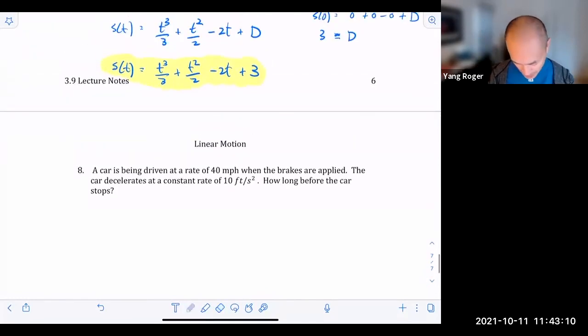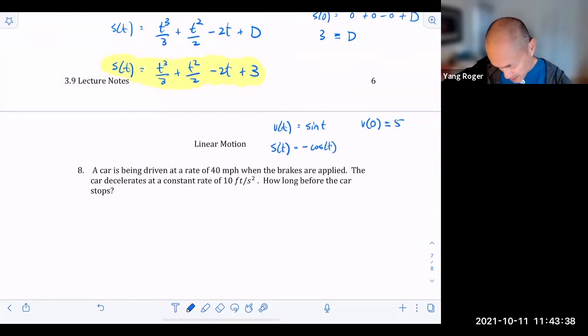So I just wanted to give you a quick example. Like, let's say I told you that V of T is equal to cosine of T. And then let's say I told you that V of zero is equal to five. I'm sorry. Make this a sine of T like this. So when you do this, the antiderivative of sine is negative cosine, right? So this is going to be negative cosine of T plus C. But when you plug in and I need to give you S of zero, not V of zero. Sorry. S of zero.